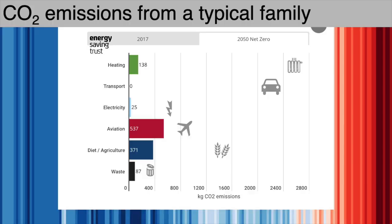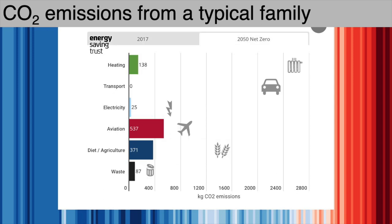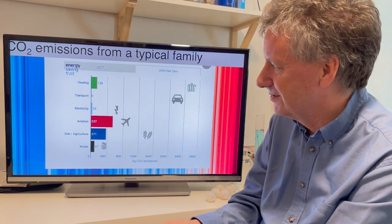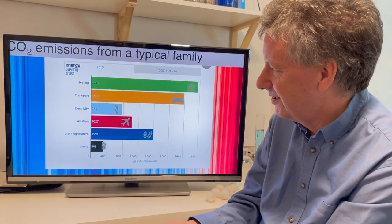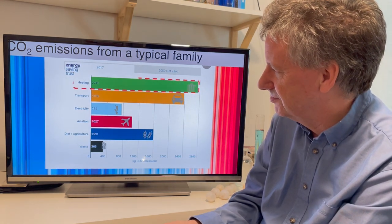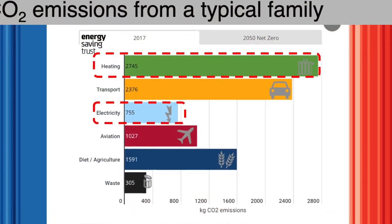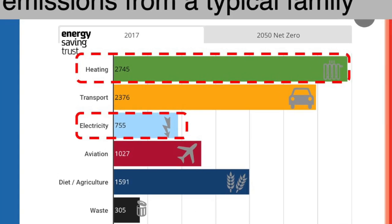If in 2050 we want to have net zero as a country, we need to get those emissions down to zero. Many of these solutions are on the way — transport is going to be electric for sure — but the things I want to talk to you about are heating and electricity: how you can do things right now that will reduce your carbon dioxide emissions.